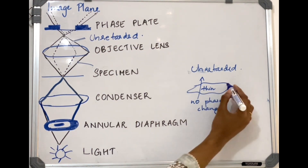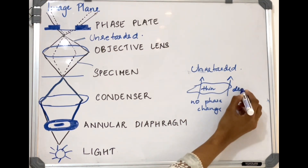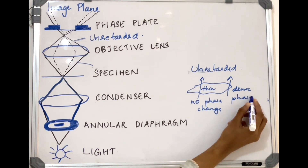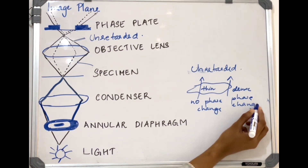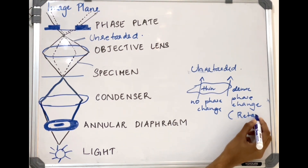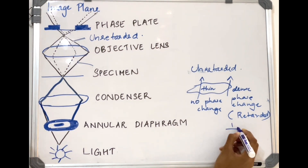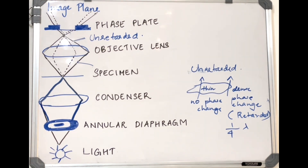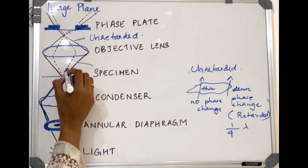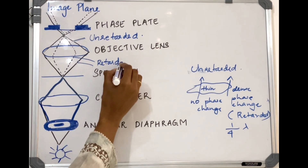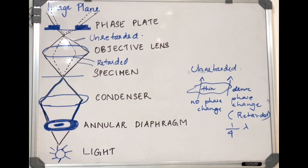If light passes through a dense region of the specimen, the light deviates from its normal path — there will be a phase change and retardation. This is the retarded light ray. The retardation of this light is 1/4 of the wavelength of incident light. The retarded light ray takes some time to reach the observer compared to the unretarded ray.